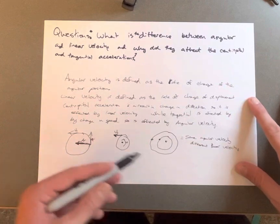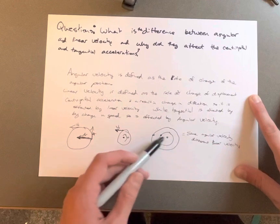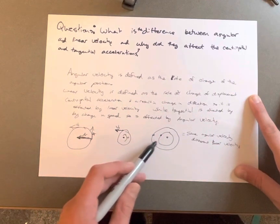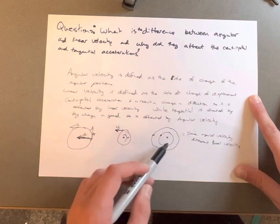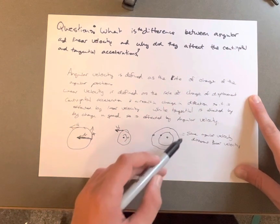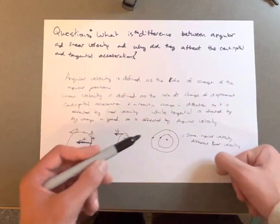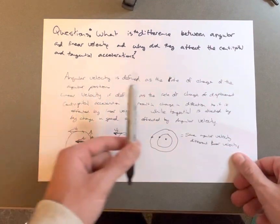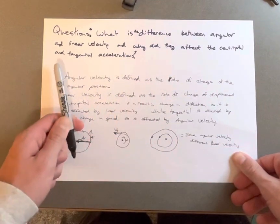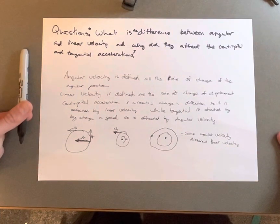A good way to think about this: two objects at different radii will both be moving at the same angular velocity — that's how much they're moving around the circle — but they travel different distances, so they have different linear velocities. Angular velocity is measured in radians, and that's why we find a difference between angular acceleration and centripetal acceleration. Centripetal acceleration is measured in meters per second squared, while angular is in radians.